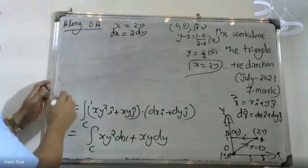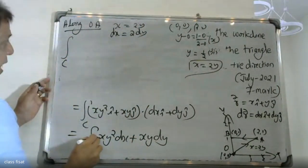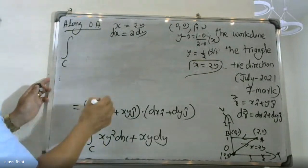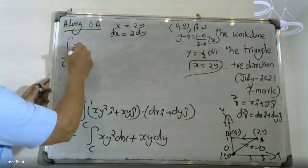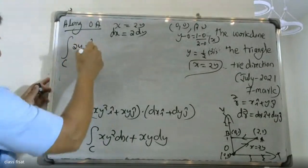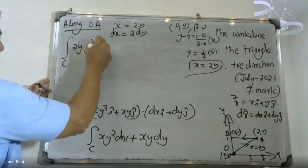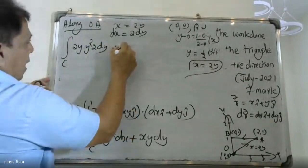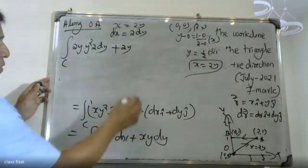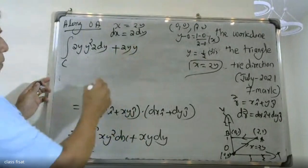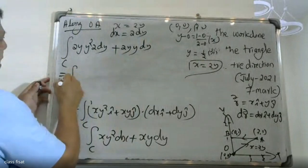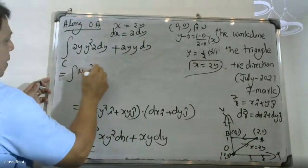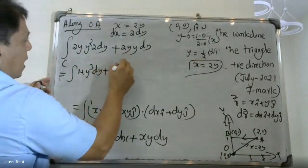With x equal to 2y, dx equals 2 dy. Substituting, we get the integral of 2y times y² dx plus x times y dy, which becomes the integral of 4y² dy plus 2y² dy, equal to 4y³ by 3 plus 2y³ by 3.